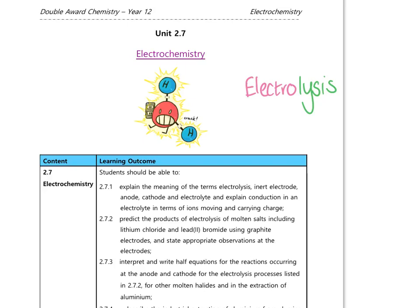Welcome to Unit 2.7, Electrochemistry. In this video we're going to look at points 1, 2 and 3 on the specification. To briefly introduce you to this topic, we're going to be looking at a process called electrolysis. That process involves splitting up or breaking down compounds using electricity. If we look at that word electrolysis and split it into two parts — electro and lysis — let's look at the end of it first. This part, lysis.